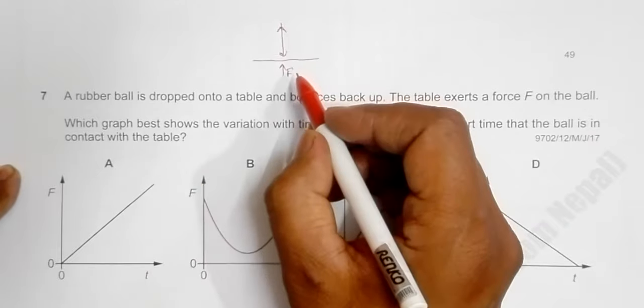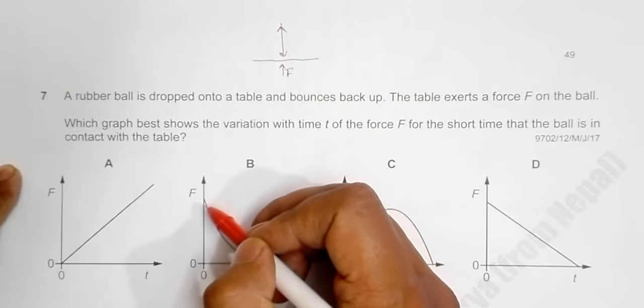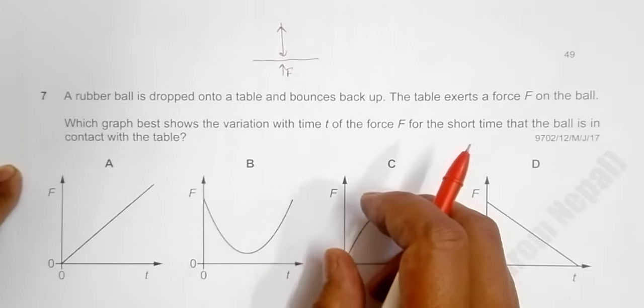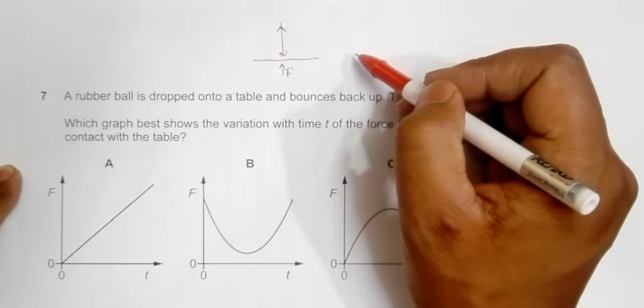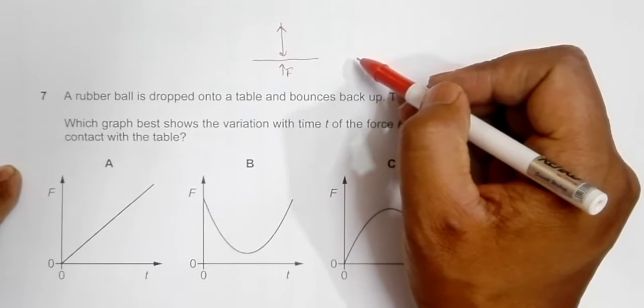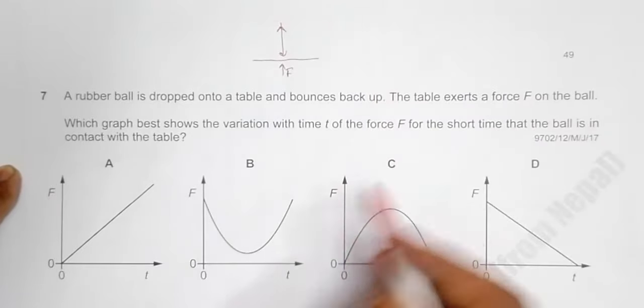We have to find the nature of variation of the force. Let's realize that before the bounce, there was no force, that means force should be zero in the very beginning. So the graphs which match this category are only choice A and choice C.